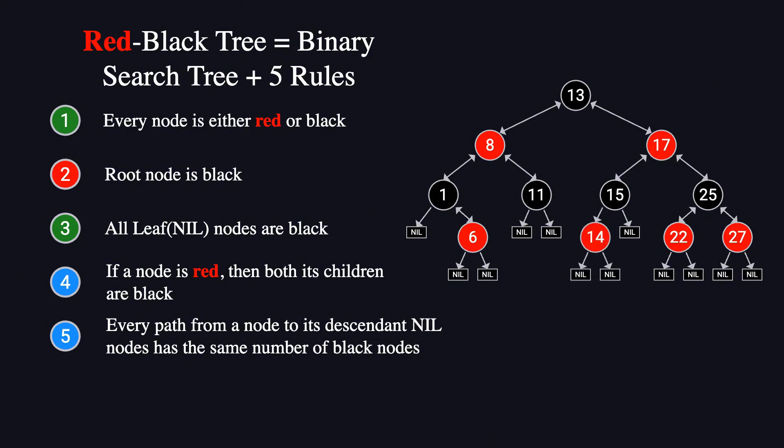if we insert node 14 into this red-black tree, it will be placed as the left child of 15. After insertion, 14's two children remain black nil nodes, so the rule remains satisfied.